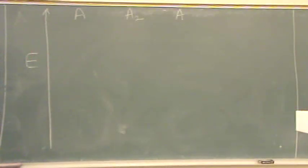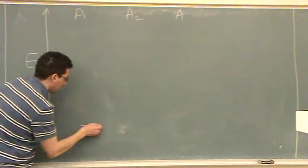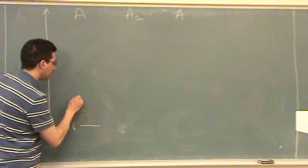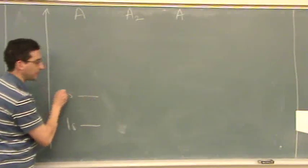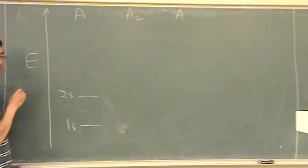And then I'm just going to put in, there's going to be a 1s orbital. I don't know where the electrons are going to be yet, but I don't care. I'm just going to draw the picture first.